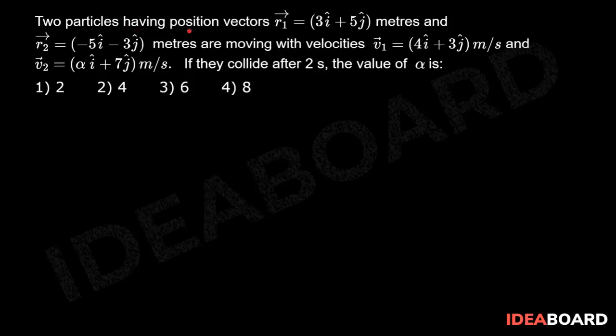Two particles having position vectors r1 bar equal to 3i cap plus 5j cap meters and r2 bar equal to minus 5i cap minus 3j cap meters are moving with velocities v1 bar equal to 4i cap plus 3j cap meters per second and v2 bar equal to alpha i cap plus 7j cap meters per second. If they collide